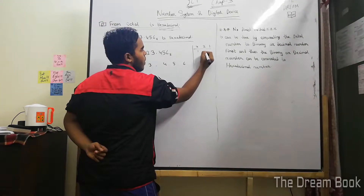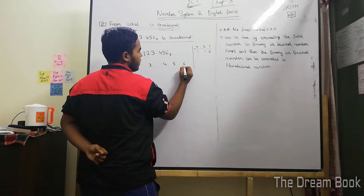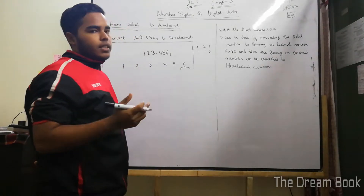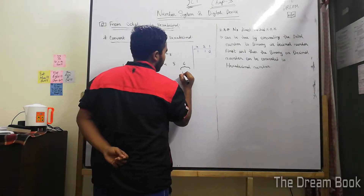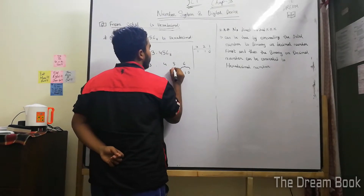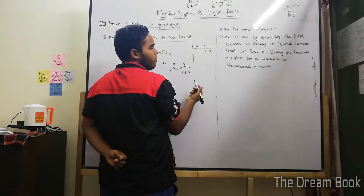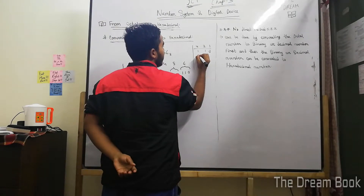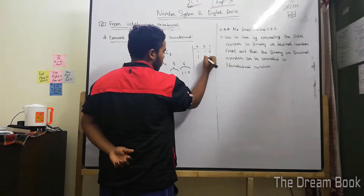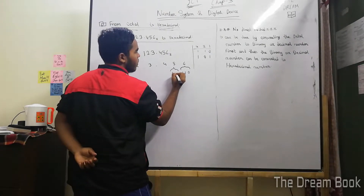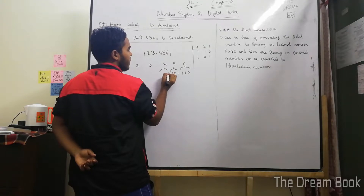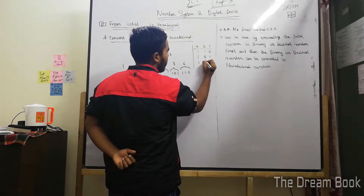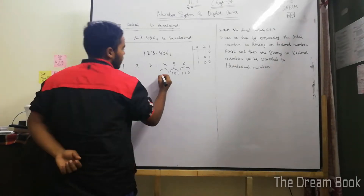We know that the octal is a 3-bit representation, so we have 3 bits. For the digit, we have 4 and 2 and 1 positions. So we have 4 and 1 on, and 2 off — so the equivalent value is 1, 0, 1.